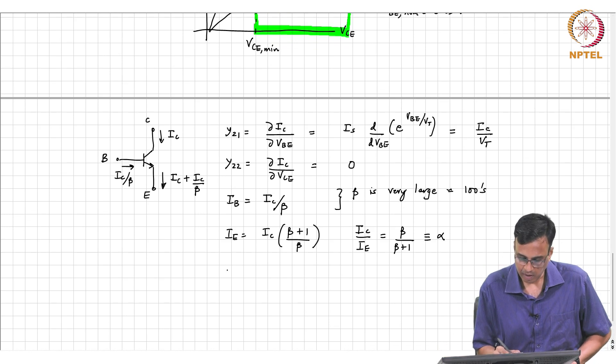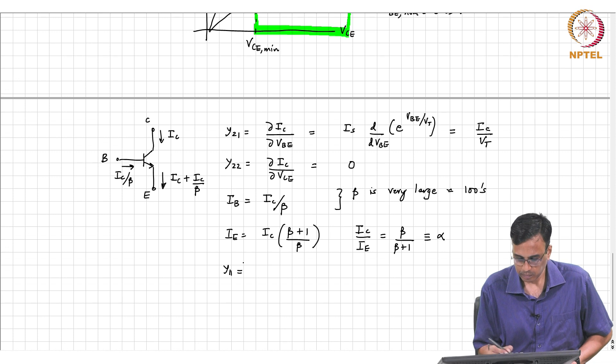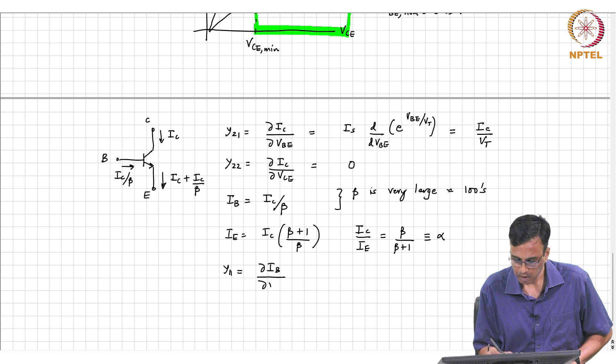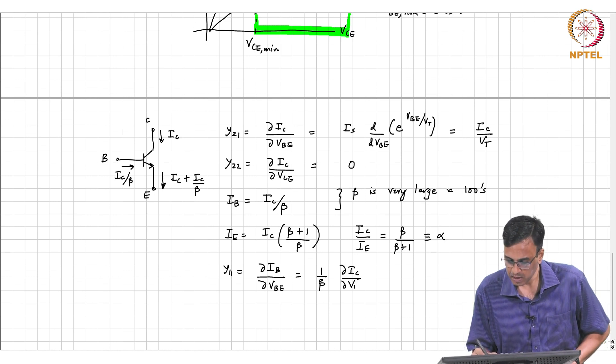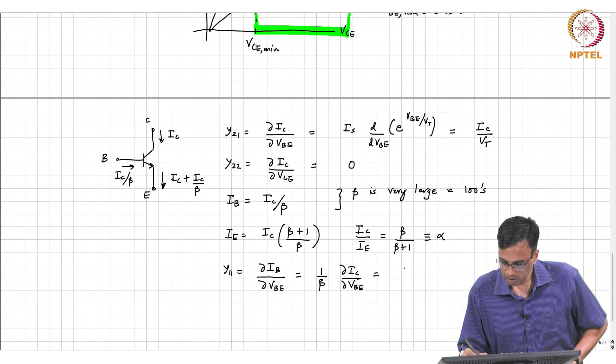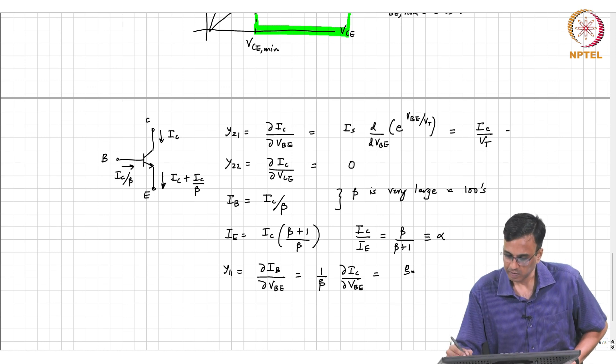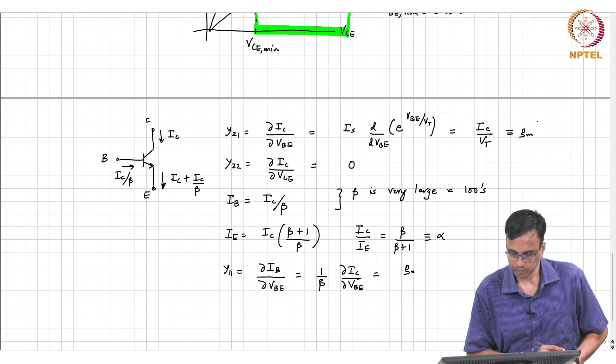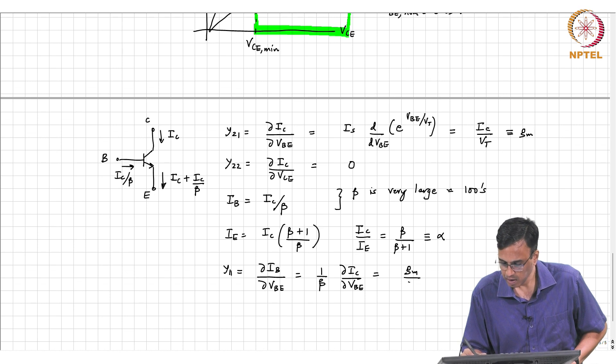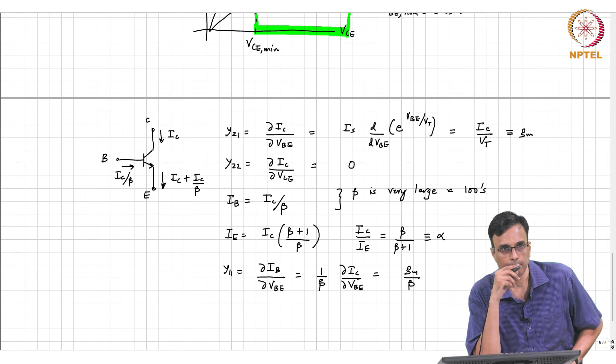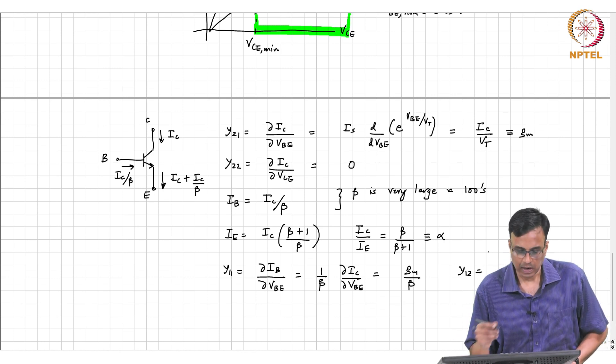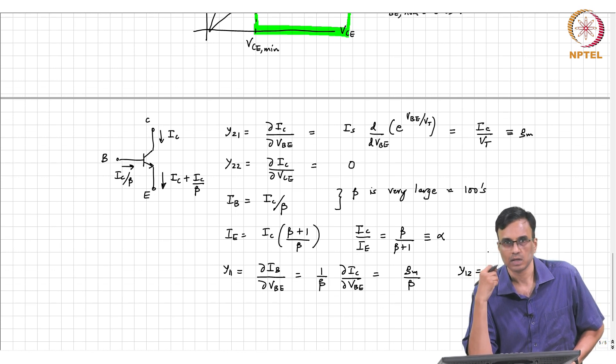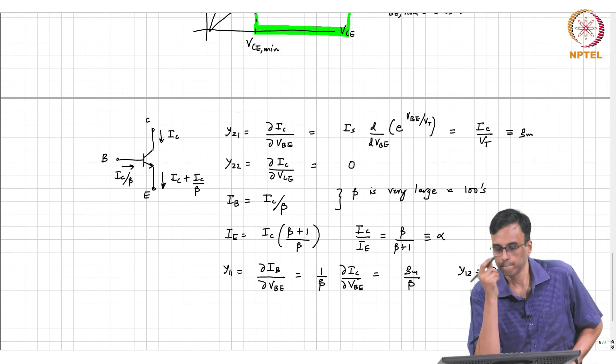With this, what is Y11? It's d IB by d VBE, which is 1 over beta times d IC by d VBE, which is gm. By the way, this is called the transconductance of the transistor gm. So this is gm by beta. And Y12, the base current does not depend on the collector emitter voltage, and therefore Y12 is 0.